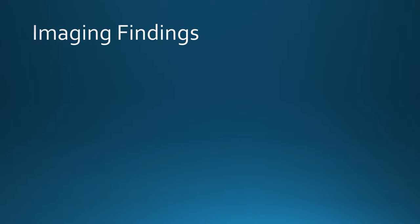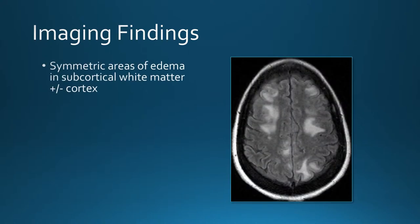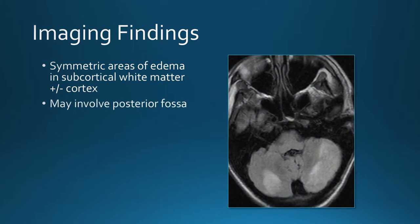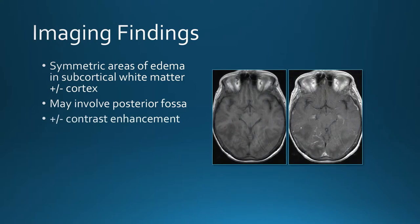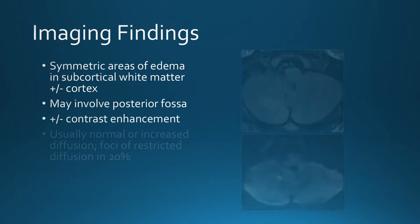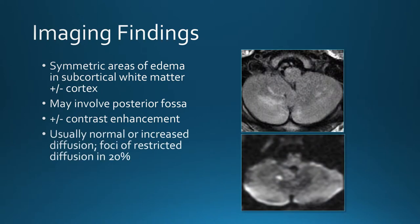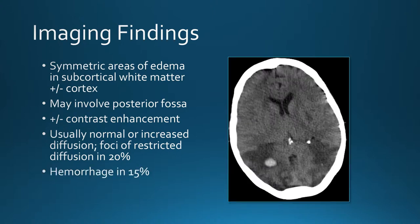On imaging, we see symmetric areas of edema in the subcortical white matter. There may also be cortical involvement, but typically the subcortical white matter is involved more than the cortex. The posterior fossa is commonly involved. There may or may not be a little bit of contrast enhancement. Most of the time there is normal or increased diffusion; restricted diffusion is seen in about 20% of cases and hemorrhage in about 15% of cases.